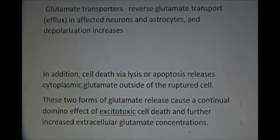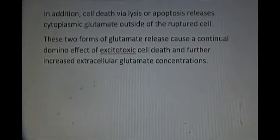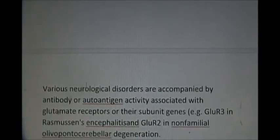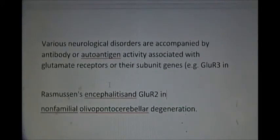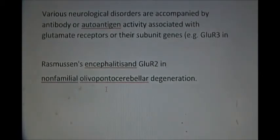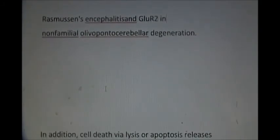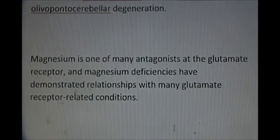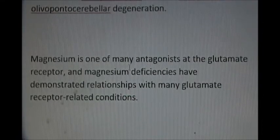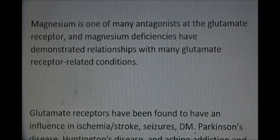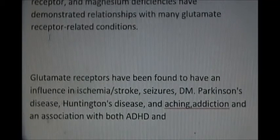In addition, cell death via lysis or apoptosis releases cytoplasmic glutamate outside the ruptured cell, which then stimulates other neurons in the area, increasing glutamate concentration. Antigen-antibody reactions at glutamate receptors may cause Rasmussen's encephalitis and non-familial olivopontocerebellar degeneration. Also, magnesium deficiency may cause excitotoxic cell damage because magnesium is the natural blocker or antagonist of the NMDA receptor, so any deficiency may cause excitotoxicity.